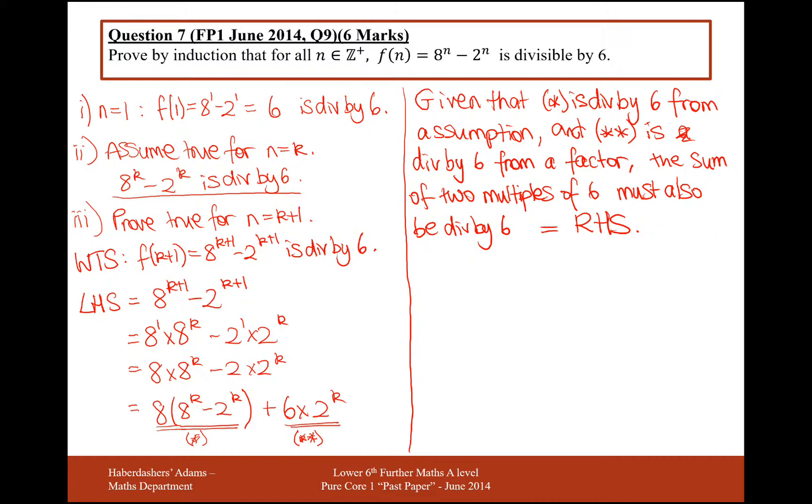Therefore, by proof by induction, f of n equals 8 to the n minus 2 to the n is divisible by 6 for all n that are positive integers. Now, don't forget to write down this part there in your proof, otherwise you may miss out on 1 mark out of your 6 marks in total for this question. Make sure that you don't do that.